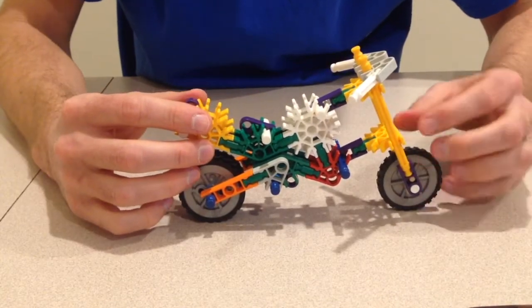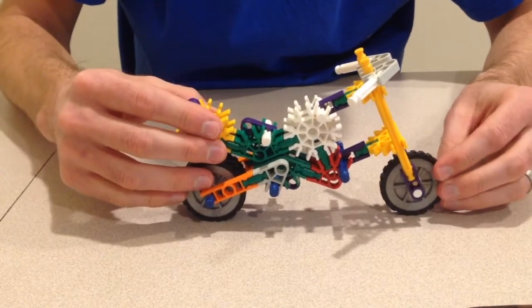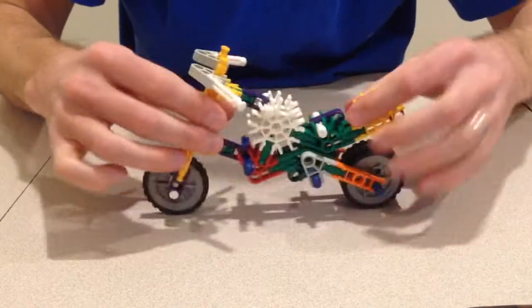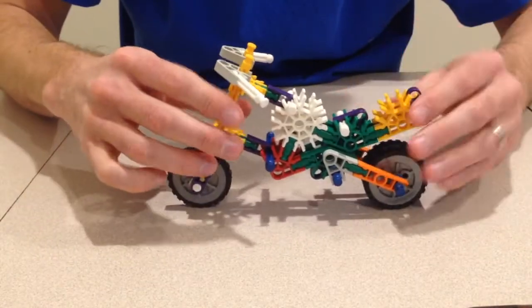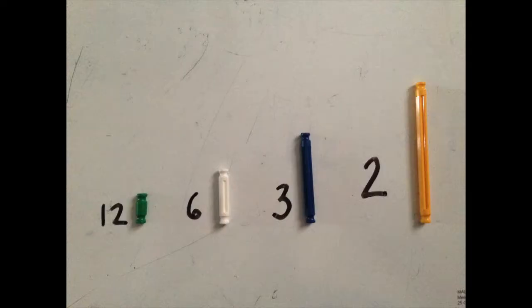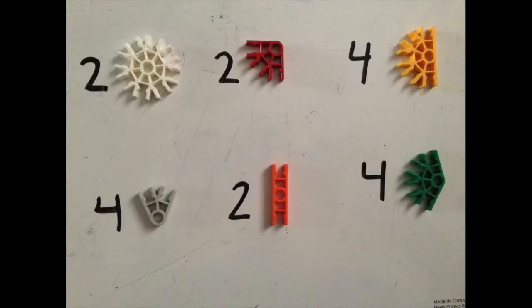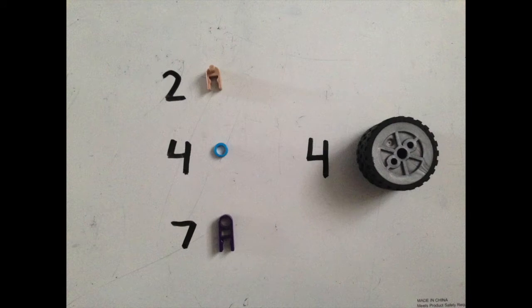Today, I'm going to show you how to use K'nex pieces to build this simple motorcycle. The motorcycle has rolling wheels, a seat, and handlebars. Here are the rods and connectors needed to build this motorcycle. You can pause the video at any point while you build.